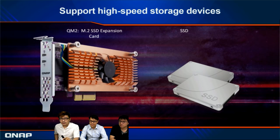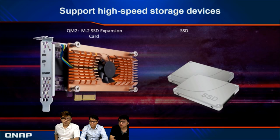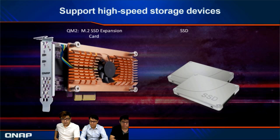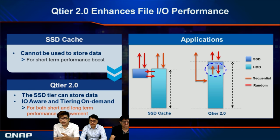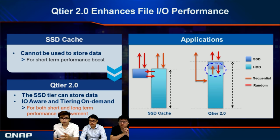If your current NAS doesn't support SSD or 10G ports, you can use QNAP expansion cards. For example, the QM2 card with a PCIe slot lets you install your own M.2 SSD for fast read and write speed — whether for VM or NAS purposes. During backup, this delivers very high efficiency. You can also use the QTier function to enhance read and write speed.